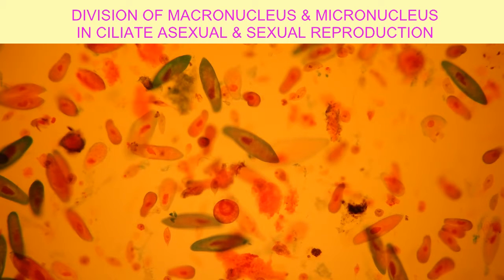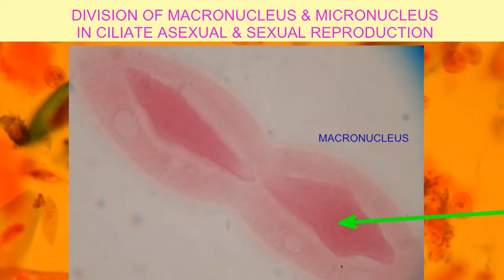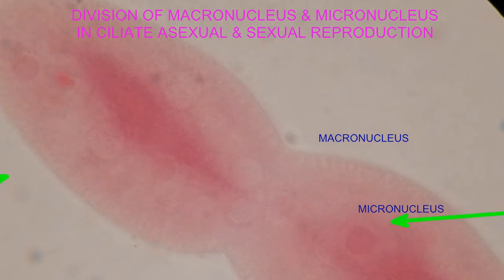When ciliates, such as the genus Paramecium, undergo asexual reproduction, they divide by fission, and the large macronucleus divides through something known as amitosis. There is no orderly separation of the chromosomes to make sure the daughter cells receive equal numbers and kinds of chromosomes, while the micronucleus does divide by mitosis.